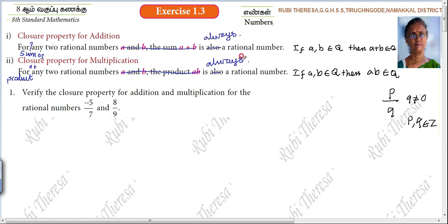This is the easy way to remember. When they are asking closure property for addition or multiplication: sum of any 2 rational numbers is always a rational number; product of any 2 rational numbers is always a rational number. It is compulsory that you should take A, B — any alphabet you can use. Q is a representation of rational numbers. In general, if you take X, Y: X plus Y belongs to Q, and X times Y belongs to Q.